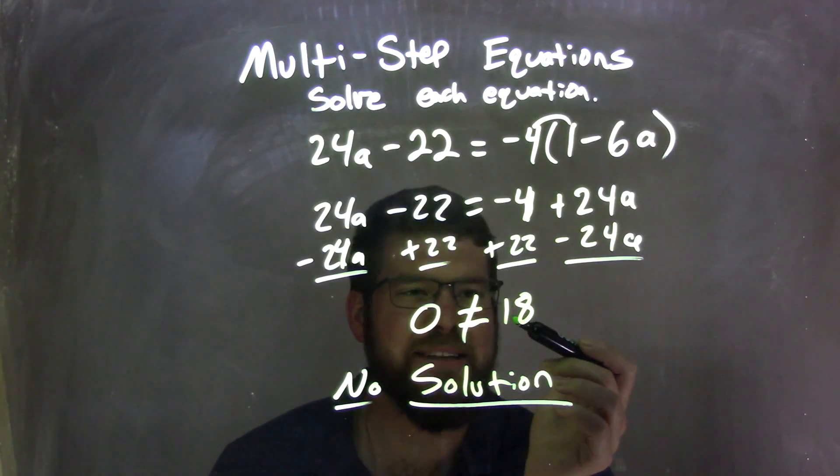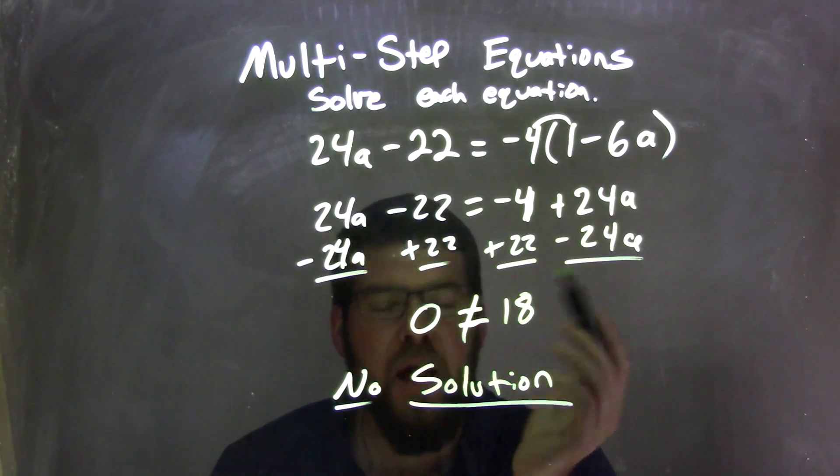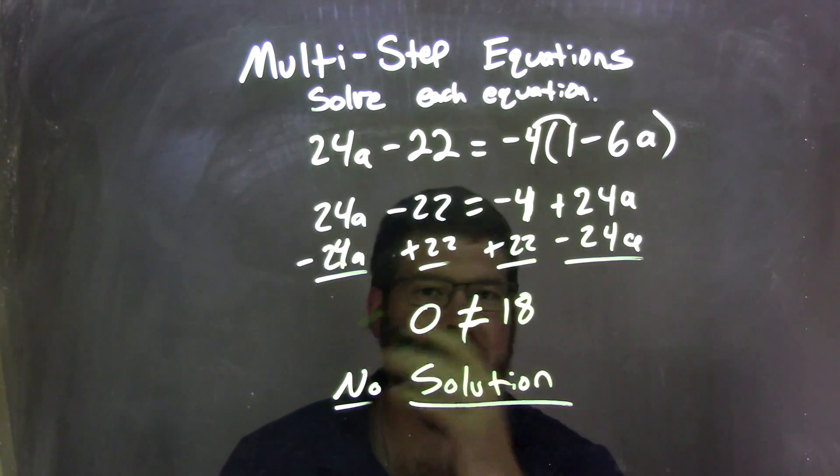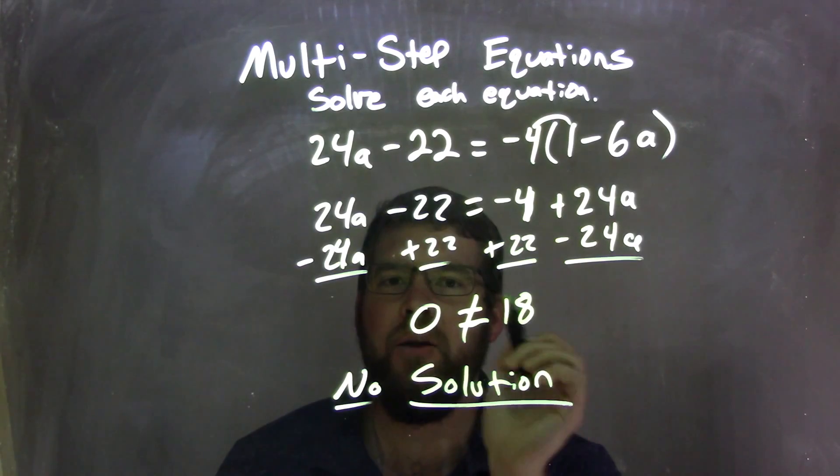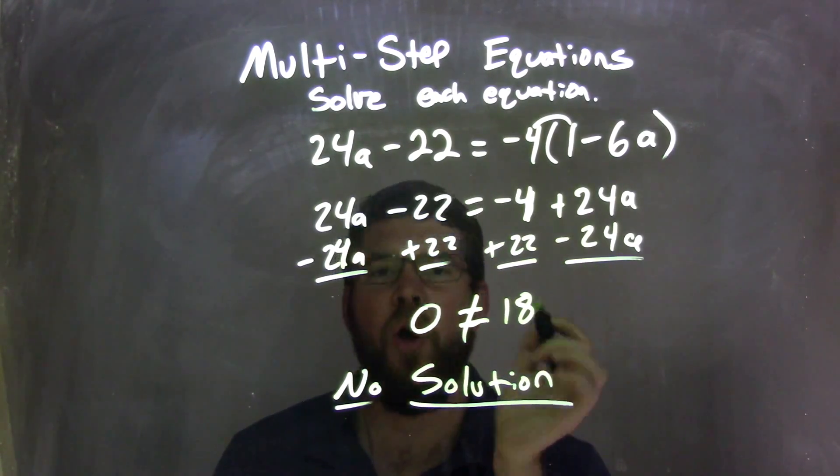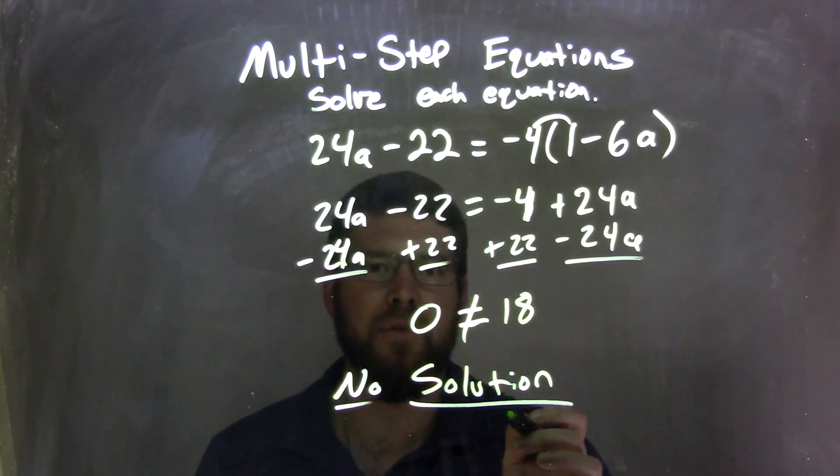Well, 0 does not equal 18, right? So it's not equal. When that happens, when I have a number not equaling another number, it's not a true statement, I then will write no solution. Okay? Because there's no solution that works. So my final answer here for this problem is no solution.